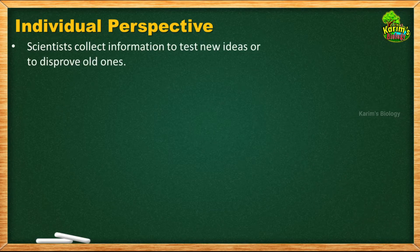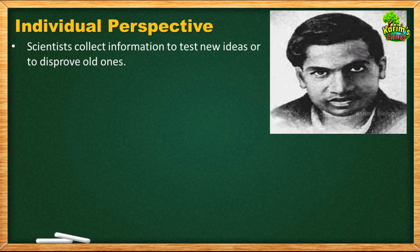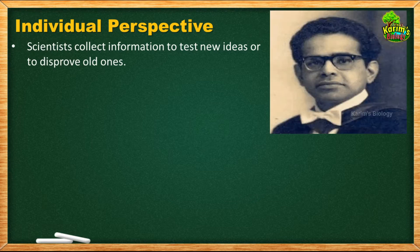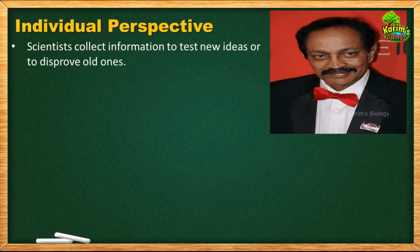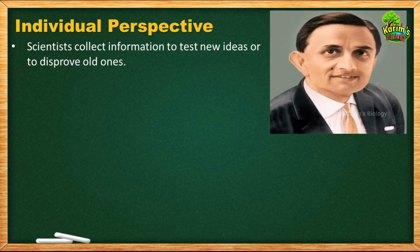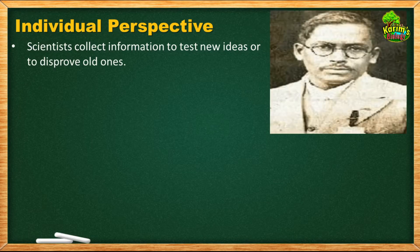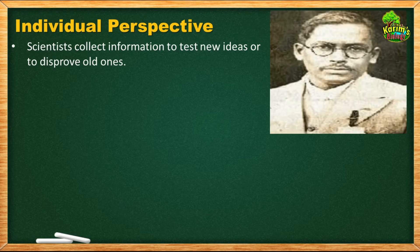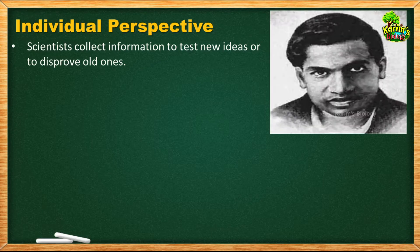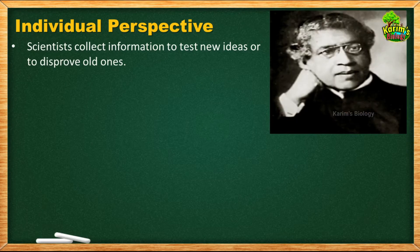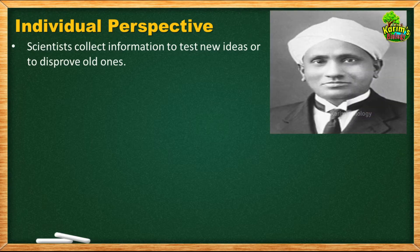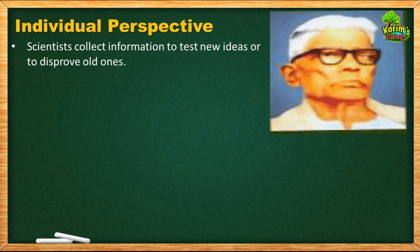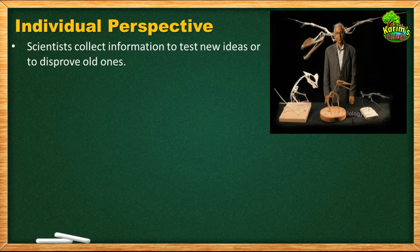Let us first find out about the individual perspective of science. Scientists collect information to test new ideas or to disprove old ones. There are so many scientists whose hard work has given us the knowledge we have today. To do science or research, you first need to observe your surroundings — as we saw with observational science. After observing, you collect data, and when scientists collect information they may get a new idea, which may disprove an old idea.